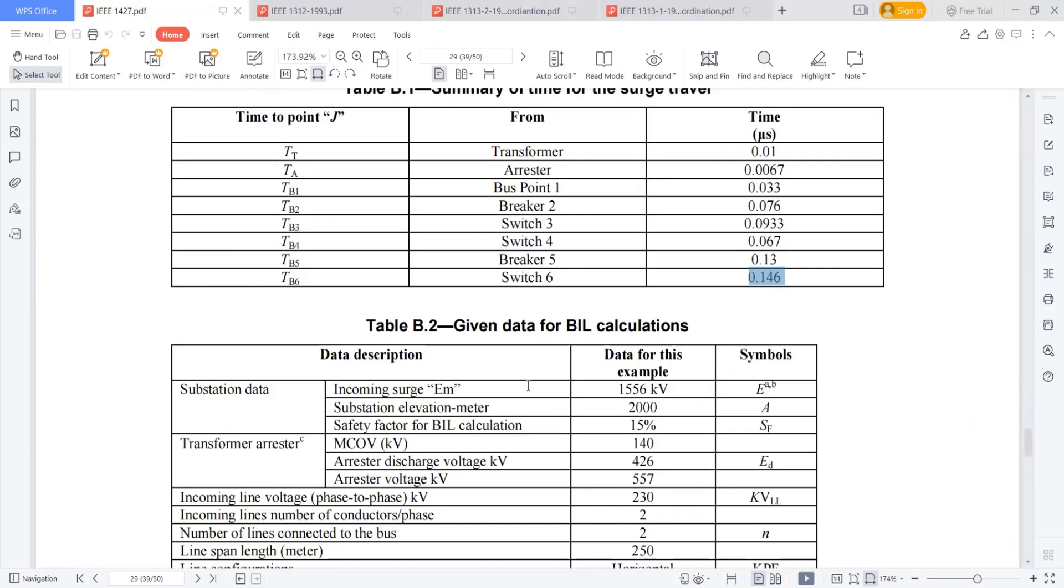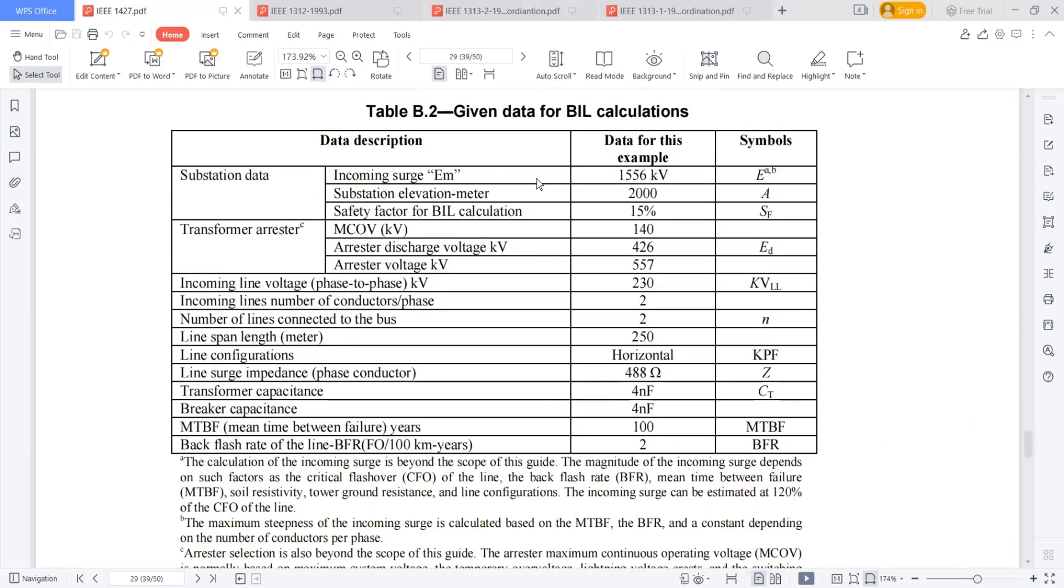Next I am collecting some data for doing this calculation. What is the data required? The first one is I need to know what is the incoming surge I can expect in my substation. How this depends is it depends upon the critical flashover rate of your transmission line or back flash rate of the transmission line. Generally, the incoming surge as per IEEE 1313 part two, it was mentioned that 120% of the critical flashover of the line gives you the incoming surge.